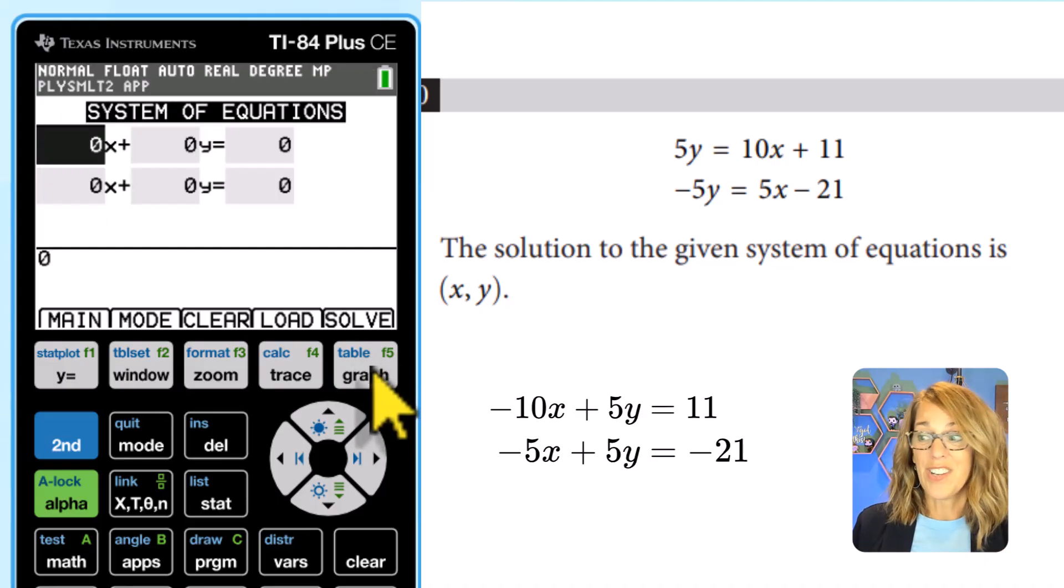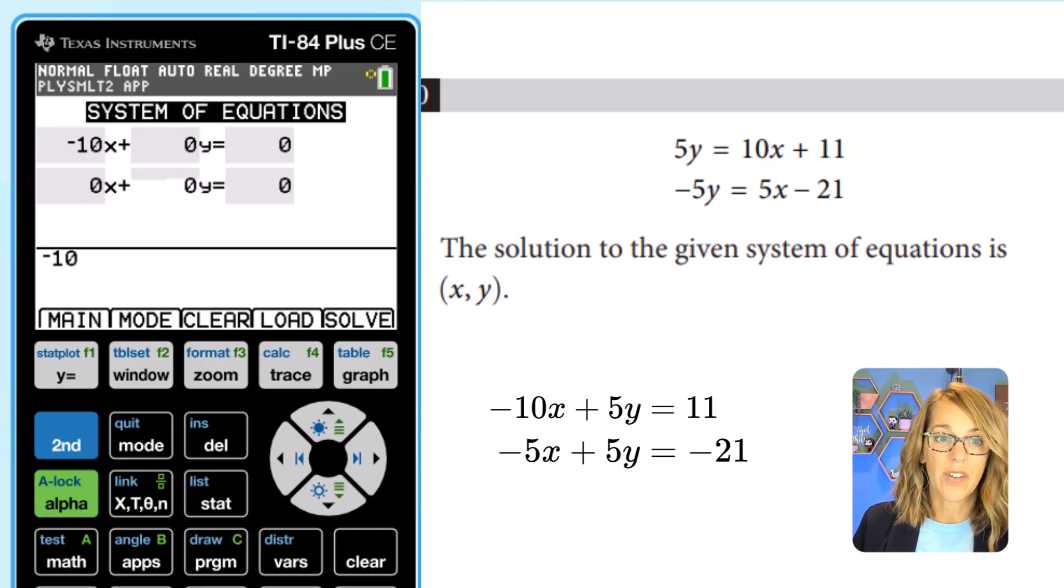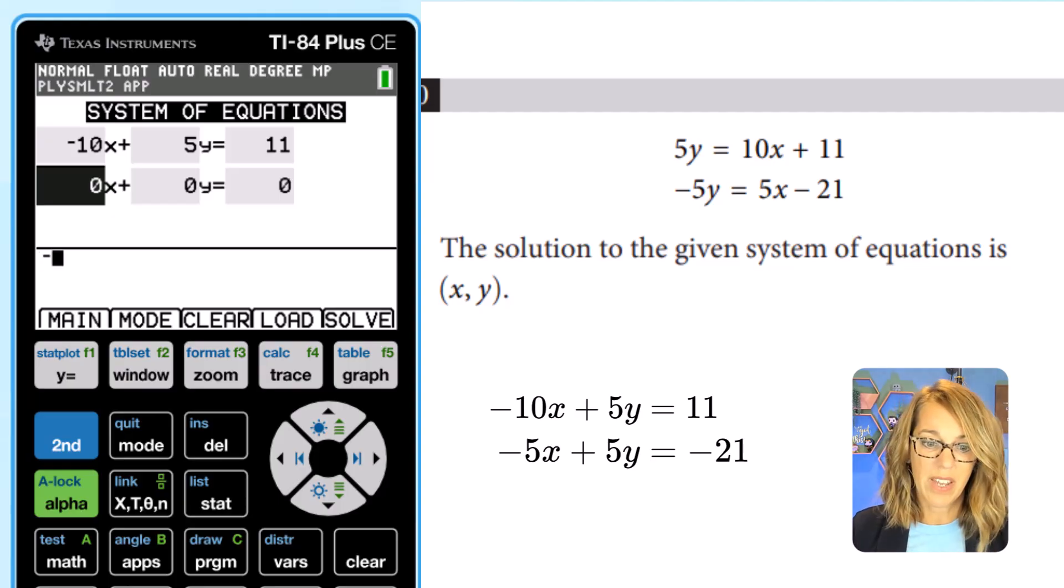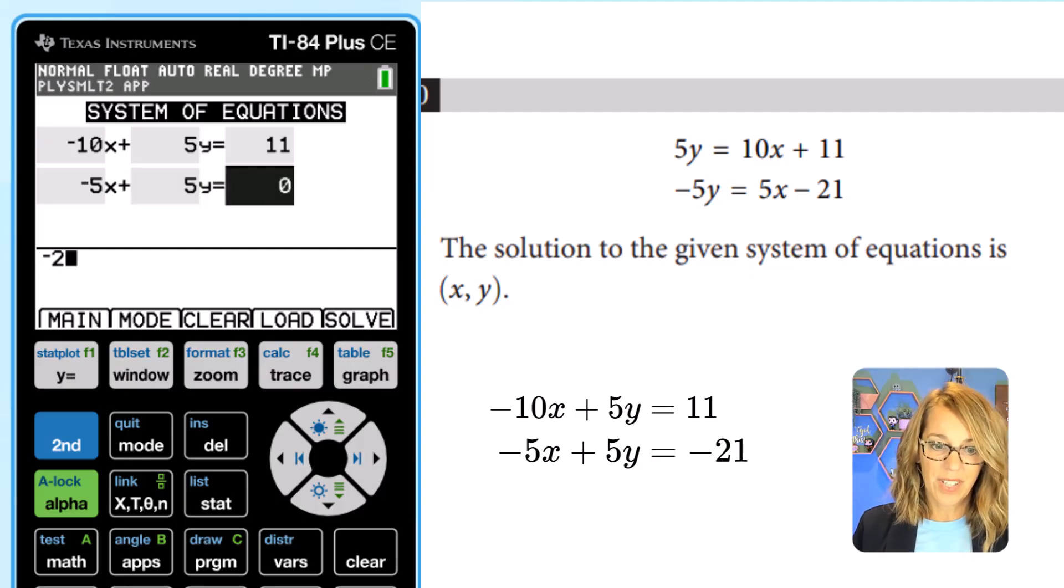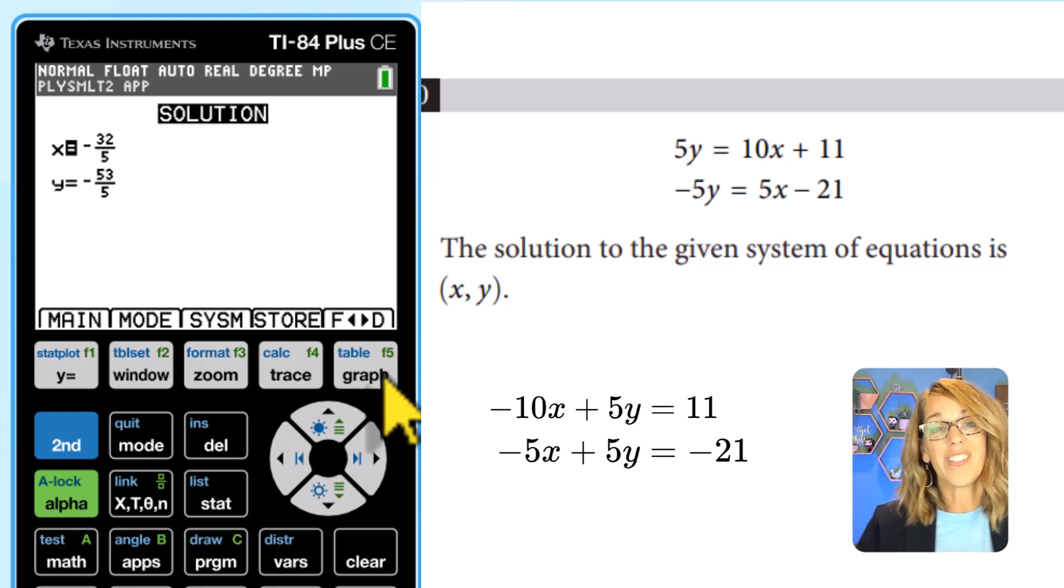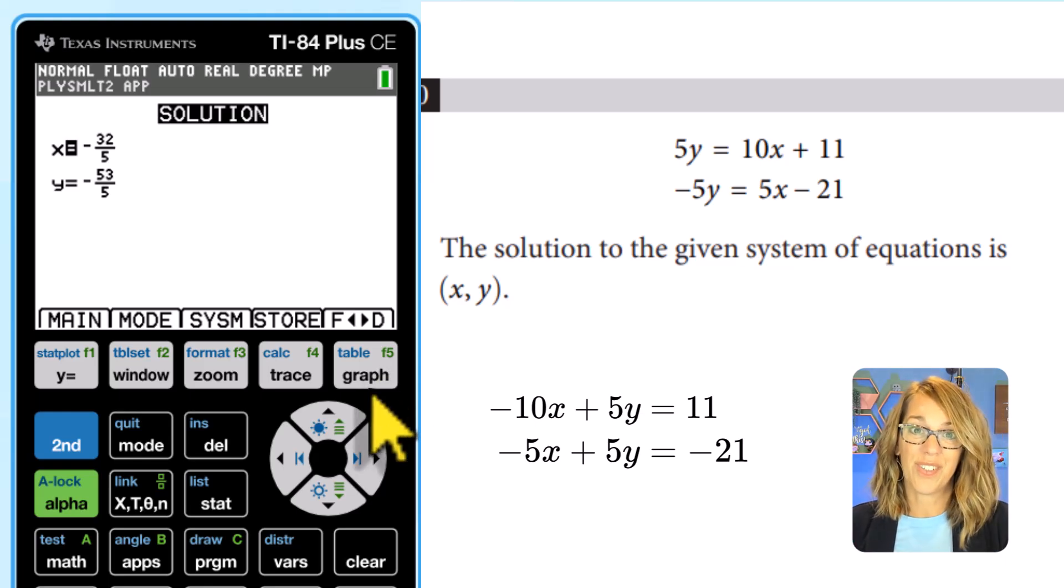Super nice, right? So now I can just type in those coefficients. So I've got negative 10. Let's do enter here. I'm not going to change the plus sign. I do want to change that next coefficient to 5. Enter. And then I've got an 11. Enter. And then this is going to be a negative 5. Enter. I don't need to change that plus because I've got a 5 next. Enter. And then I'll use that negative sign for 21. And then enter. I'm ready to solve this one. Solve is attached to graph. So I'm going to hit solve. And there are my solutions as reduced fractions.